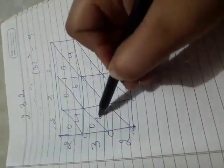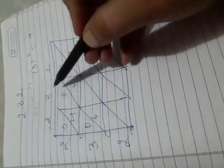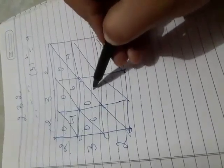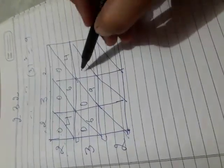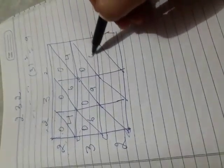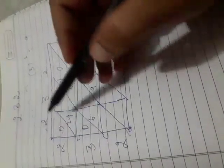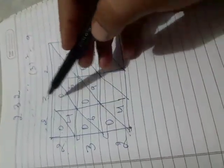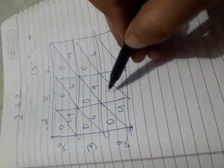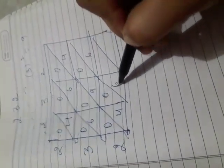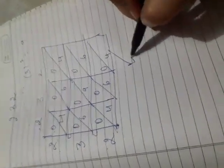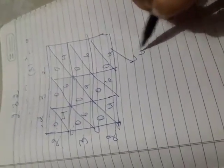Now calculate each cell: 2 × 2 = 4, write 04. 3 × 2 = 6, write 06. 2 × 2 = 4, write 04. 3 × 2 = 6, write 06. 3 × 3 = 9, write 09. 3 × 2 = 6, write 06. 2 × 2 = 4, write 04. 2 × 3 = 6, write 06. 2 × 2 = 4, write 04.